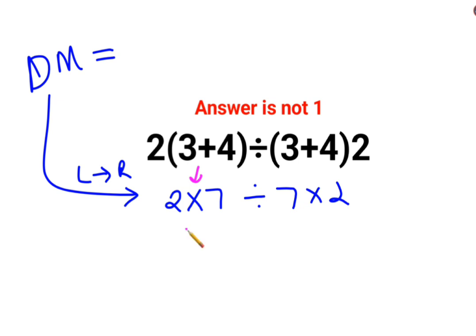So, 2 multiplied by 7 is 14, divide by 7, multiplied by 2. Now what is the first operation happening on your left-hand side? This is division. So we'll do 14 divide by 7, which is 2.